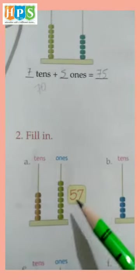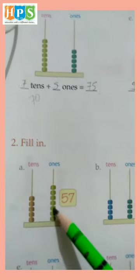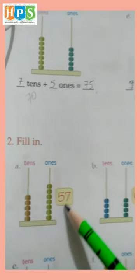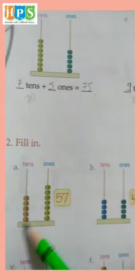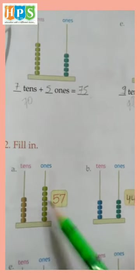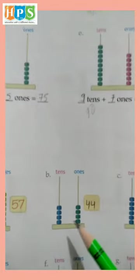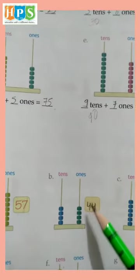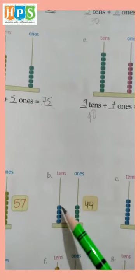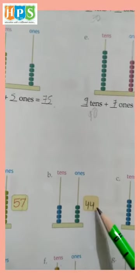Question number two. Feeling: one, two, three, four, five, six, seven - seven ones, one, two, three, four, five - five tens, means fifty-seven. One, two, three, four - four ones, one, two, three, four - four tens equals forty-four.